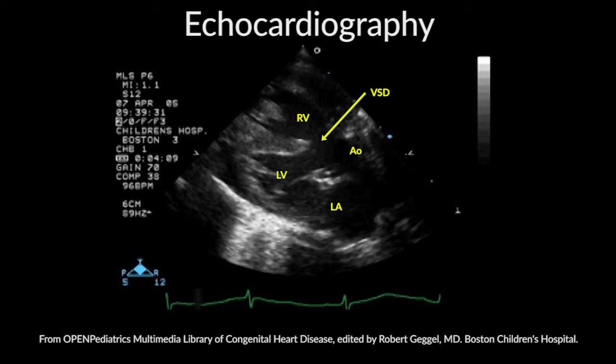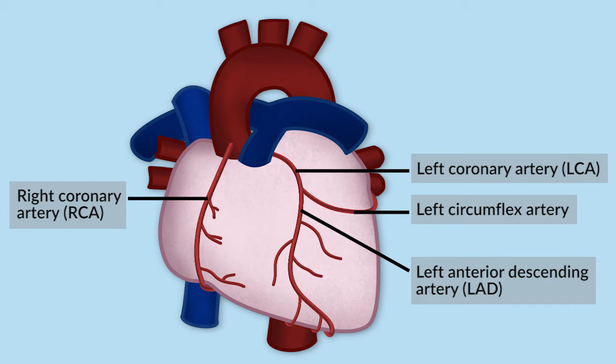Let's talk about how you would diagnose tetralogy if you thought a patient had this diagnosis. The diagnosis is confirmed by echocardiography — you would have clinical features that suggested the diagnosis and perform an echo to confirm it. In addition to confirming the four features of tetralogy and understanding how those features explain the physiology, there's one additional very important feature to assess in the diagnosis, and that is an understanding of the coronary anatomy.